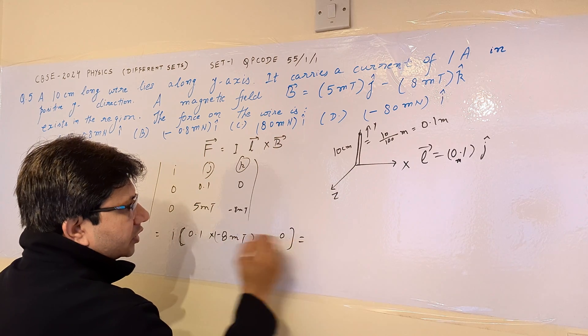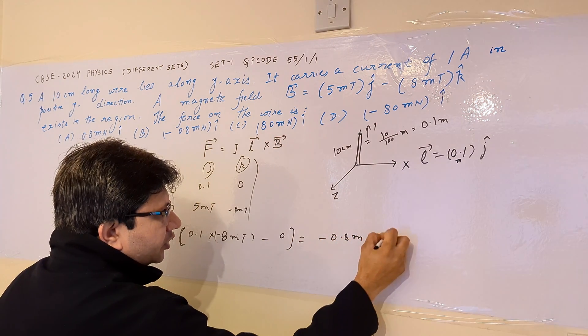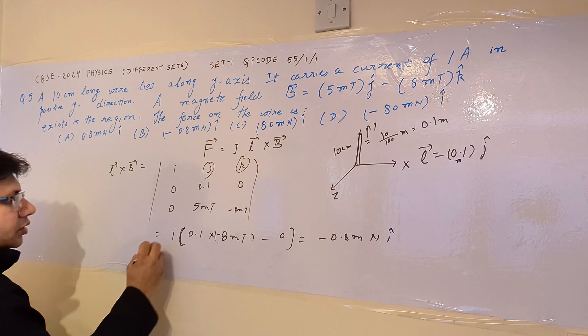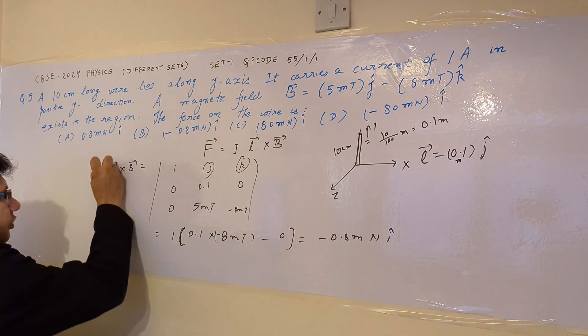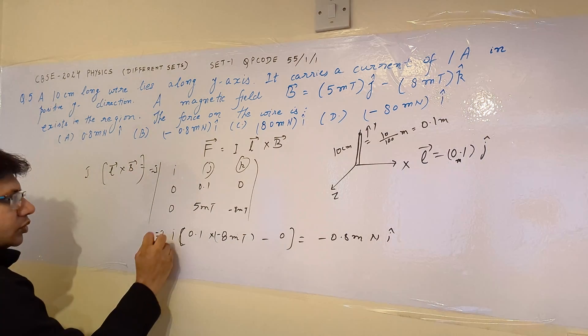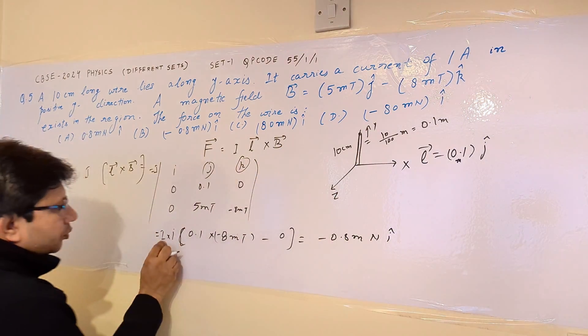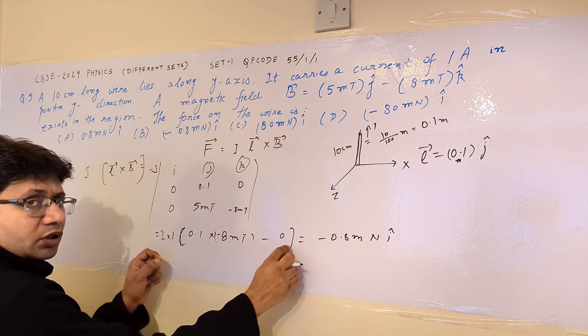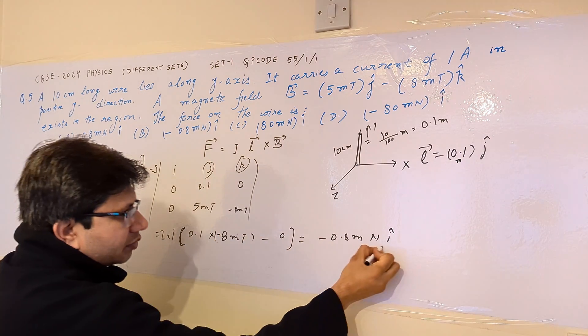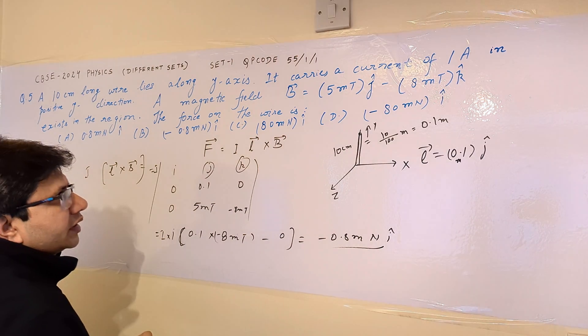So the final result comes out to be minus 0.8 millinewton I cap because we have to multiply this by I also. I is given as 1 ampere. So 1 ampere multiplied by this value, the answer comes out to be in millinewtons. So minus 0.8 millinewton is the final answer.